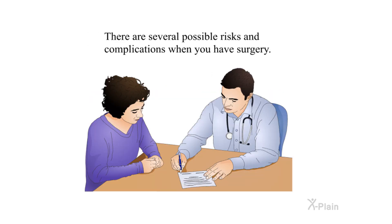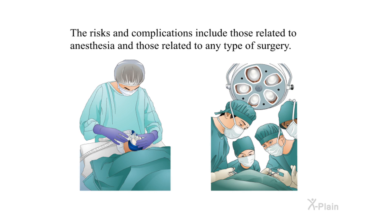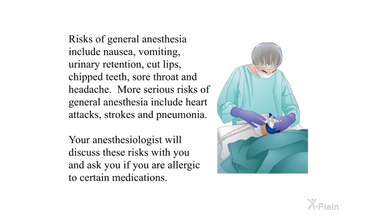Risks and complications: There are several possible risks and complications when you have surgery. You need to know about them so that by being informed, you may be able to help your healthcare provider detect complications early. Risks of general anesthesia include nausea, vomiting, urinary retention, cut lips, chipped teeth, sore throat, and headache. More serious risks of general anesthesia include heart attacks, strokes, and pneumonia. Your anesthesiologist will discuss these risks with you and ask you if you are allergic to certain medications.